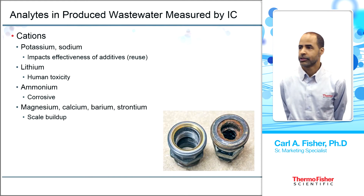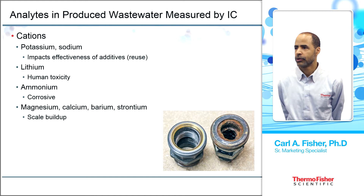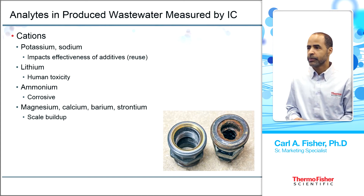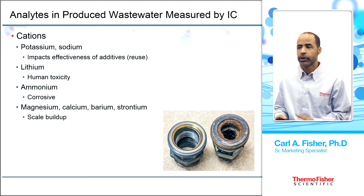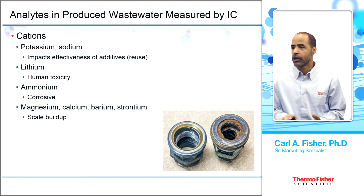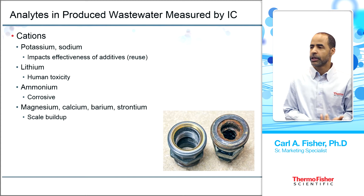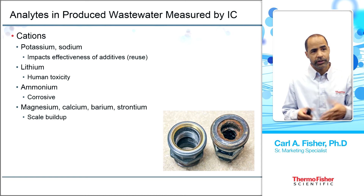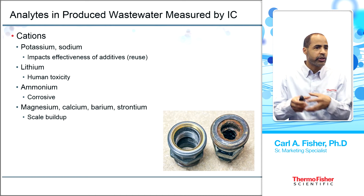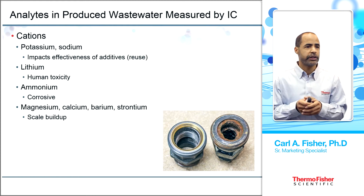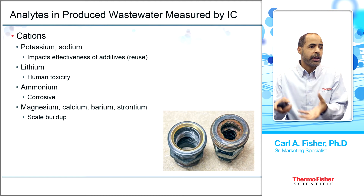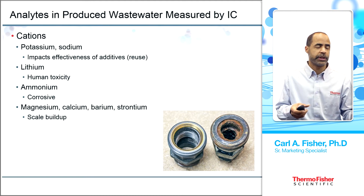On to cations. There are several cations: potassium and sodium can impact the effectiveness of additives. Lithium is toxic to humans. Ammonium is corrosive. And there are a number of things that can form scale, such as magnesium, calcium, barium, and strontium. The reason this is important is that if you have scale forming, you're going to get occlusion of the pipe transporting the liquids, and also the fractures you've created will be occluded—made smaller—and the recovery of oil and gas is going to be much less than you would like.